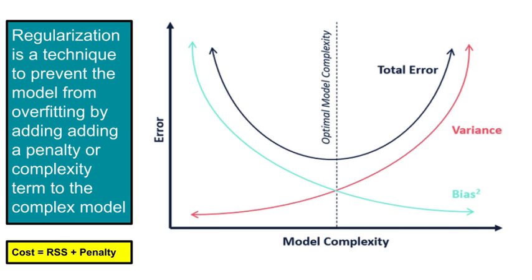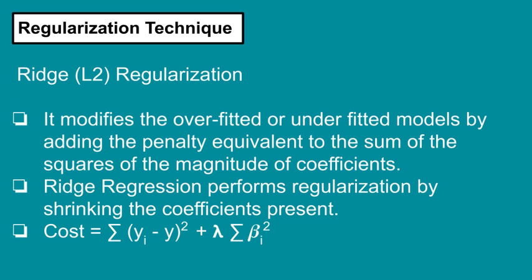Now let's understand the types of regularization. The first technique is Ridge regularization. In Ordinary Least Squares (OLS), we get the best coefficients by minimizing the Residual Sum of Squares (RSS). The RSS is the actual value minus the predicted value, squared. Similarly, in Ridge regression we estimate the model coefficients by minimizing a different cost function — we add a penalty term to the RSS.